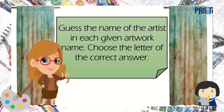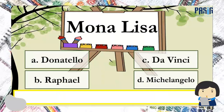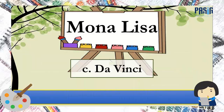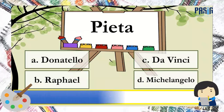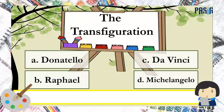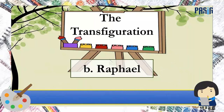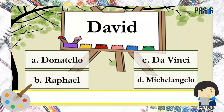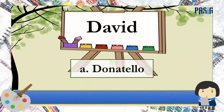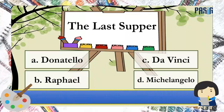Here, you have to guess the name of the artist for each given artwork. Choose the letter of the correct answer. 1. Mona Lisa — the correct answer is C. 2. Pieta — the correct answer is D. 3. The Transfiguration — the correct answer is B. 4. David — the correct answer is A. 5. The Last Supper — the correct answer is D.